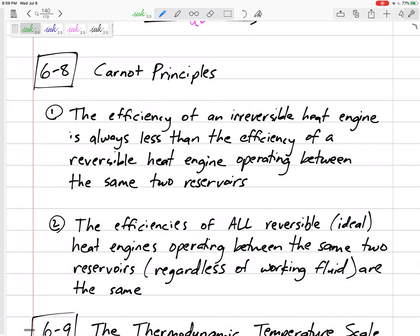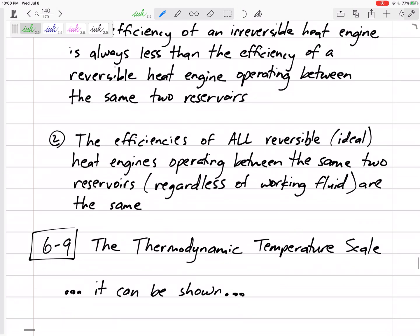Carnot principles. The efficiency of an irreversible heat engine is always less than the efficiency of a reversible heat engine operating between the same two reservoirs. And still, a reversible heat engine is not 100% efficient. It could be 80%, it could be 70%. A reversible is just the best that we can do. Irreversible is always going to be less than the efficiency of a reversible.